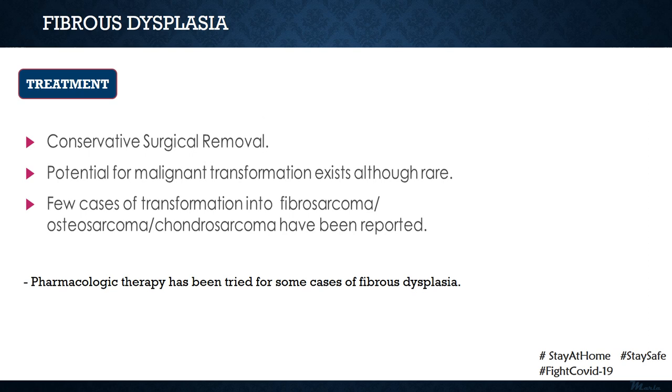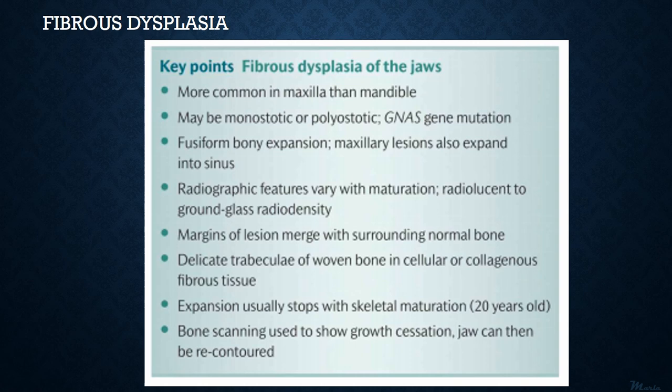Some studies have also reported the use of pharmacologic therapy for mild cases of fibrous dysplasia. Key points to remember: fibrous dysplasia is more common in the maxilla, related to GNAS1 gene mutation, with fusiform bone expansion. Radiographically it shows a ground glass appearance with margins merging with surrounding bone. Delicate trabeculae of woven bone are seen without osteoblastic rimming. Expansion usually stops after skeletal maturity, which can be confirmed by bone scanning. Treatment includes recontouring.